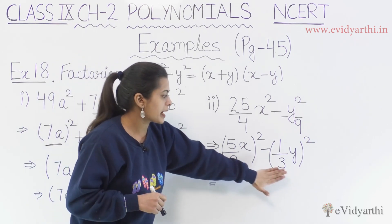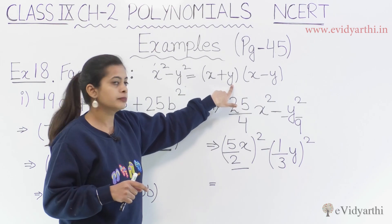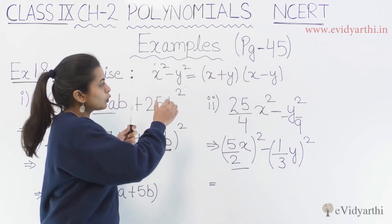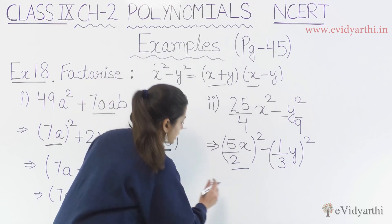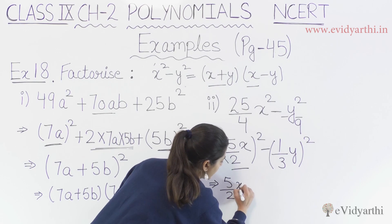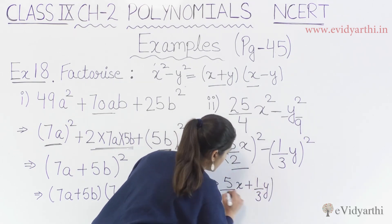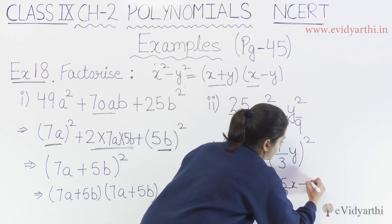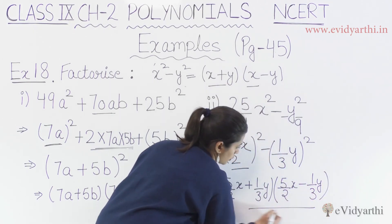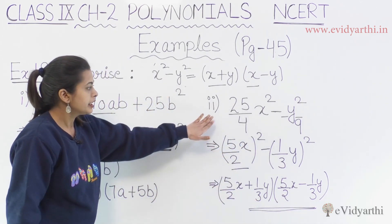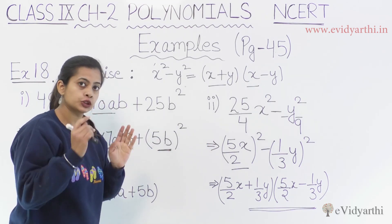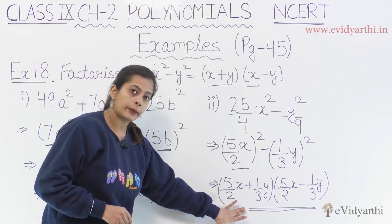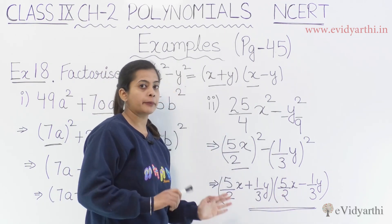So now we have the x² minus y² formula, which gives us first term plus second term, times first term minus second term. So we write it exactly the same way: first term plus next term, multiplied by first term minus next term. That gives us the factors: 5 by 2 times x plus y by 3, and the next factor is 5 by 2 times x minus y by 3.